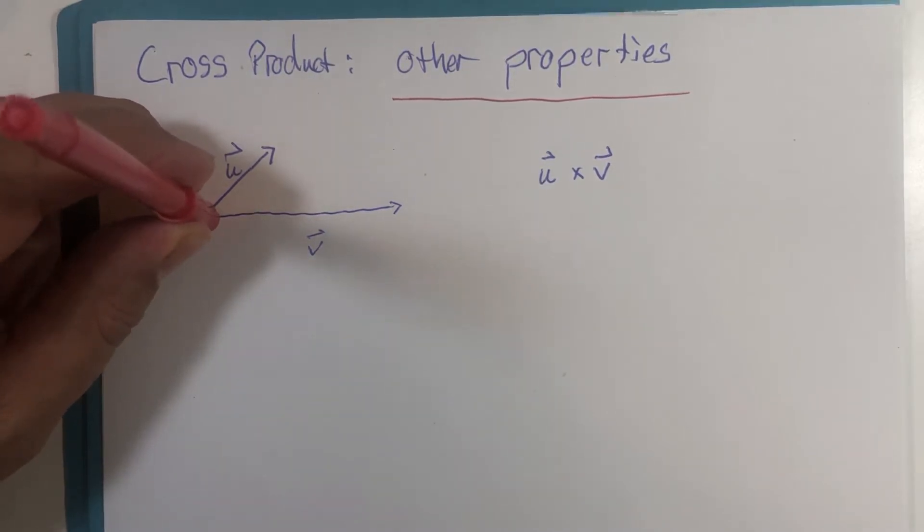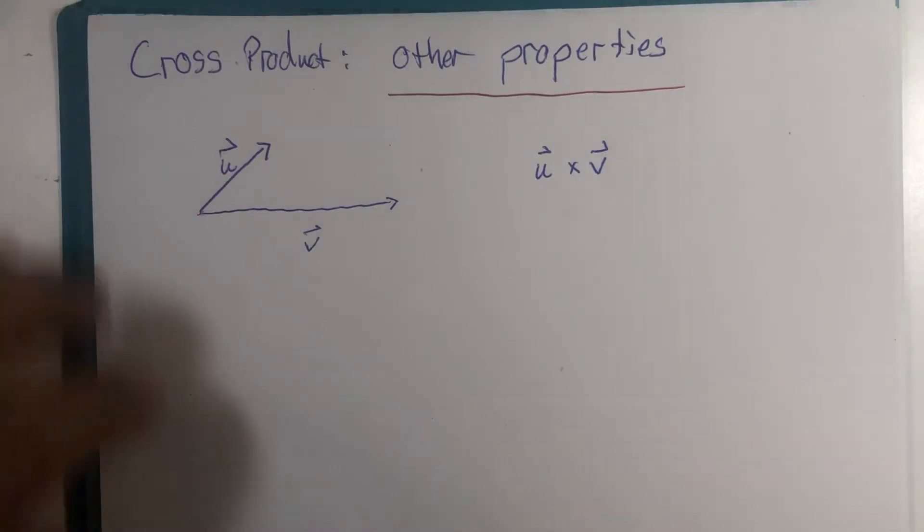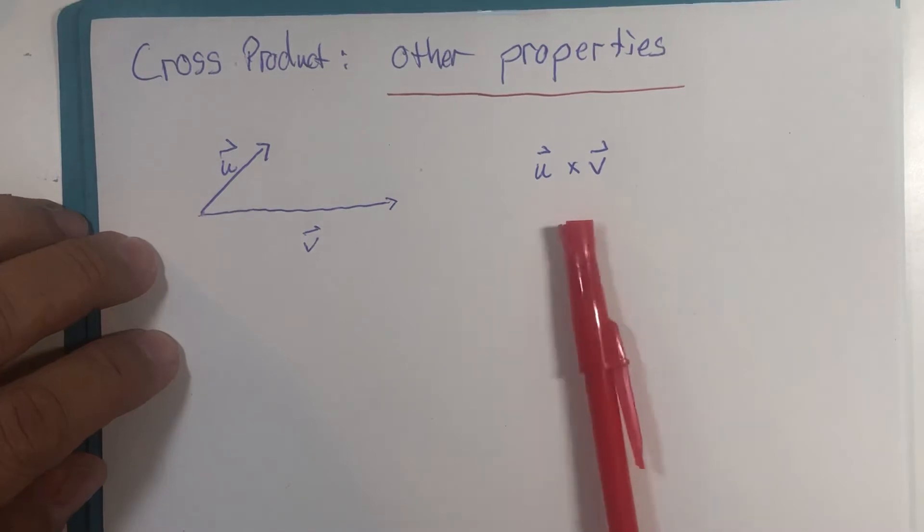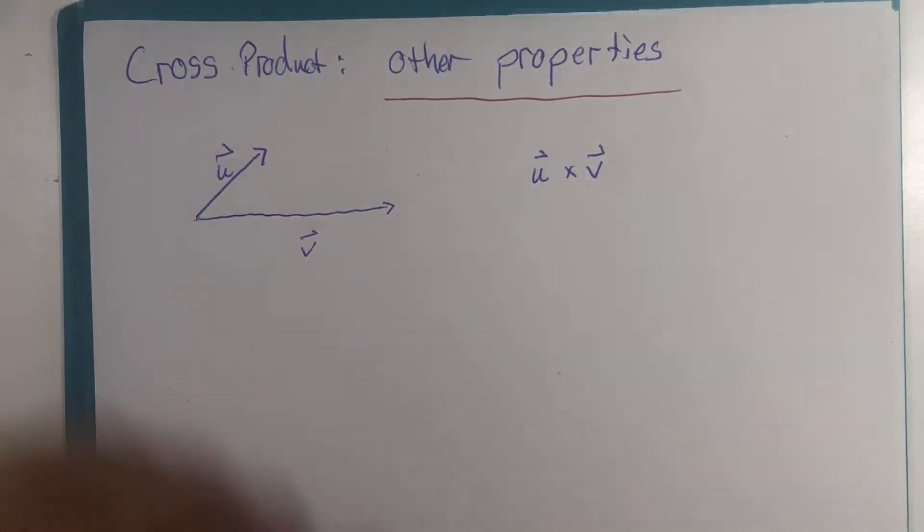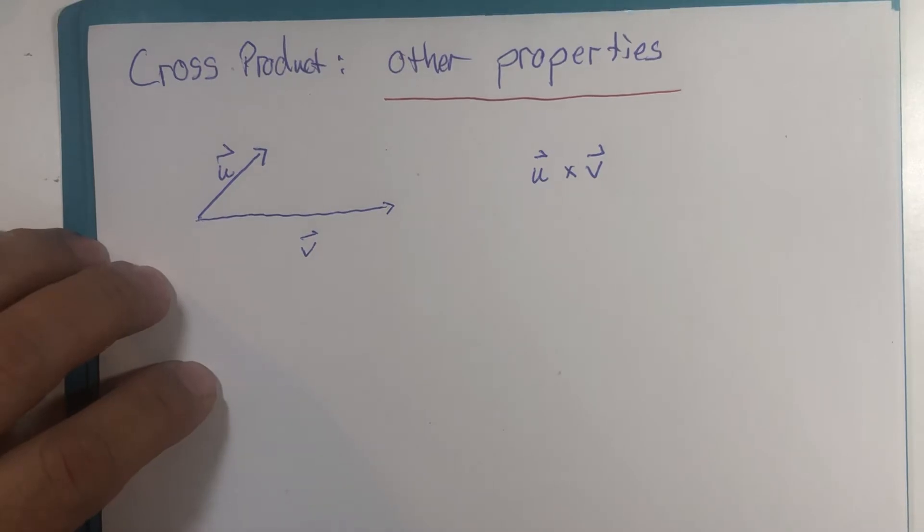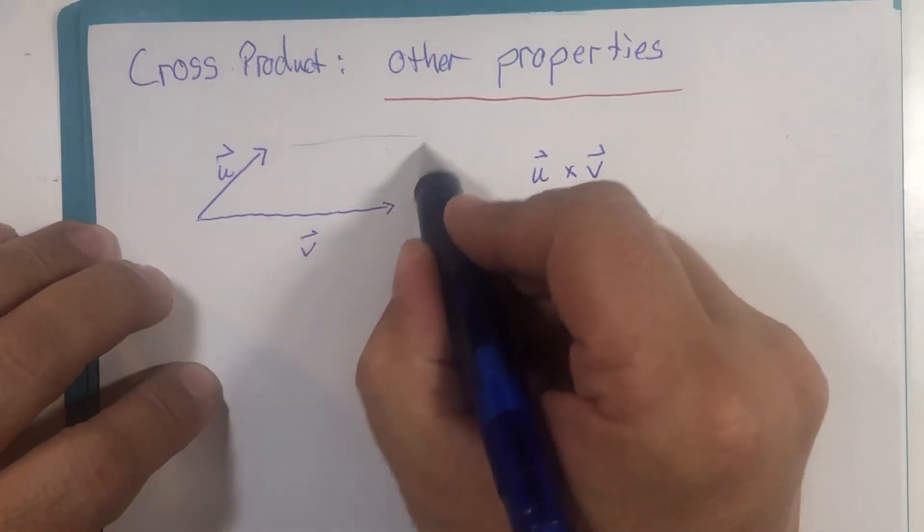We use the word orthogonal because vectors don't necessarily have location, they have direction and magnitude. So it turns out that if you calculate the cross product, you get a vector, and that vector has uses in and of itself.